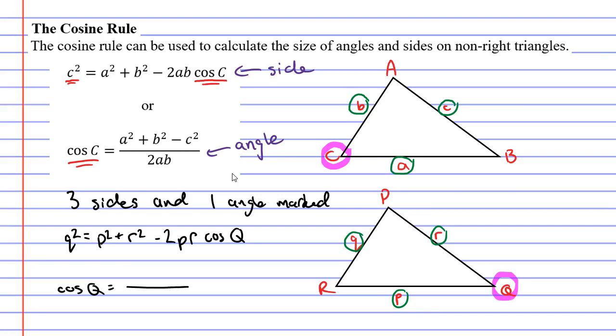How would we write this one with p, q, and r? Well you'll notice in the previous formula that capital C was our angle and lowercase c our side was subtracted at the end. So because we're using q, we need to subtract q² at the end, and we need to have the letters p and r in place of a and b. So we would have p² + r² - q², then finally 2pr at the bottom of the fraction.